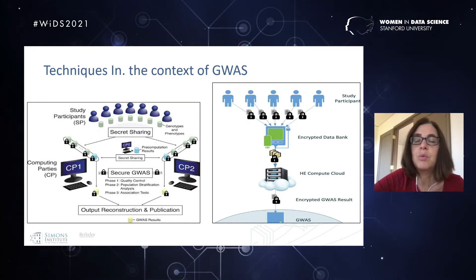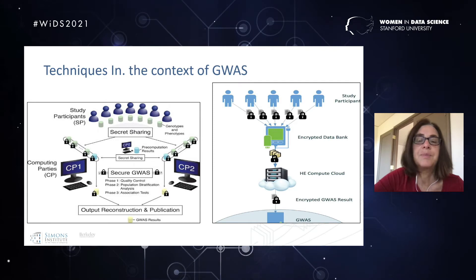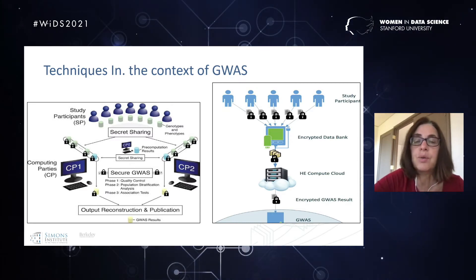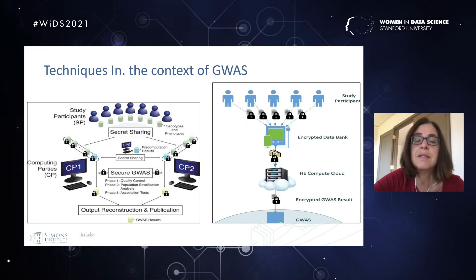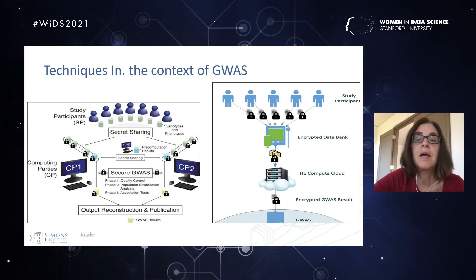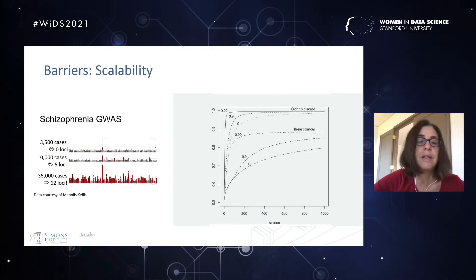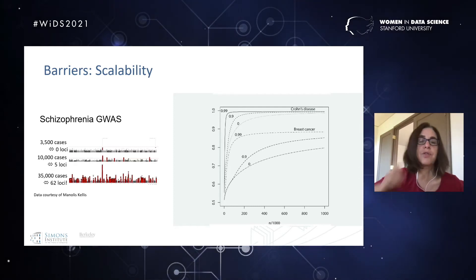The second architecture is homomorphic encryption. Here the study participants do not split their information into shares; instead they encrypt it using a special encryption scheme that enables a single server to compute on all the encrypted information from all participants and produce a result. Decryption requires a key held by multiple servers or specialized hardware. So the distinction is: in MPC you split secrets and trust servers not to collaborate; in homomorphic encryption you encrypt and rely on a single server, removing the need for that trust assumption.